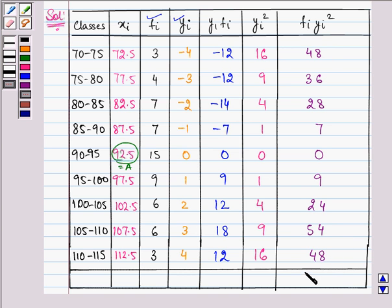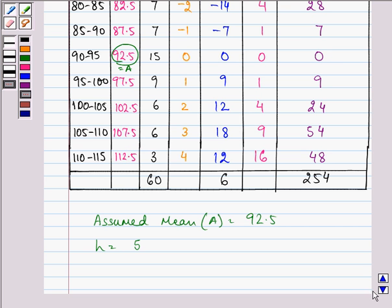Now find out the sum, that is coming out to be 254 here, 6 over here, and the sum of all the frequencies are 60.